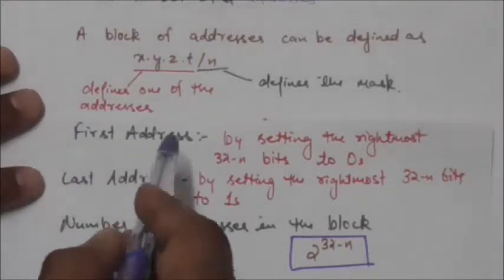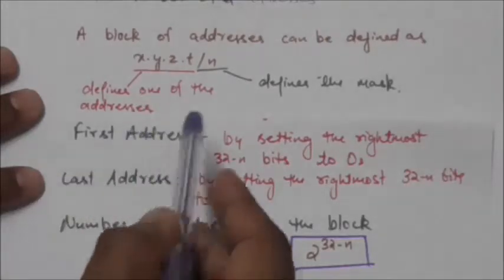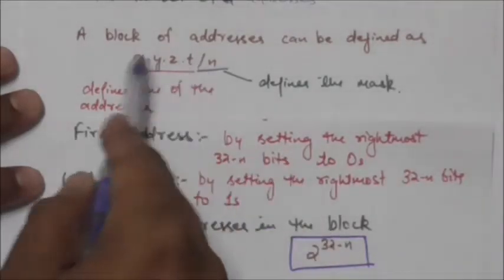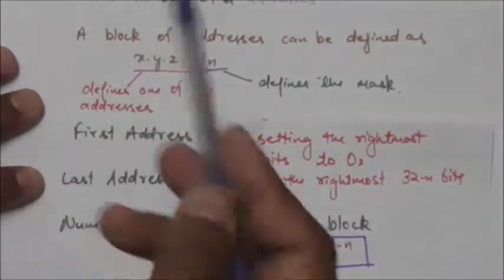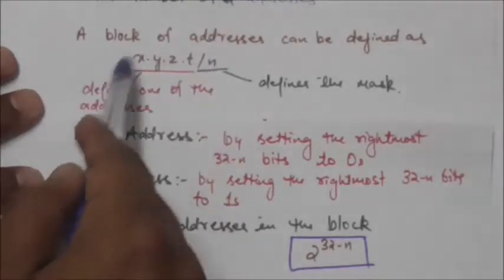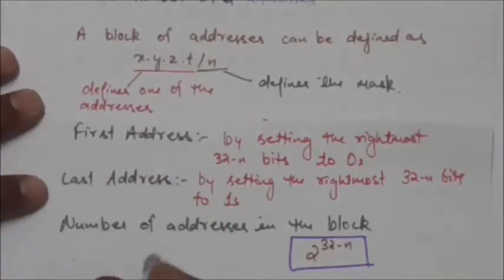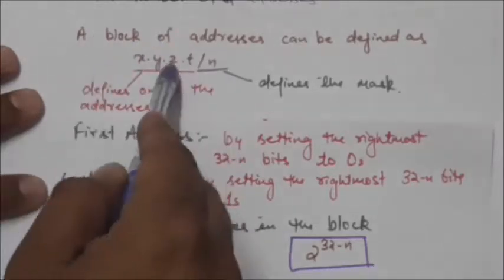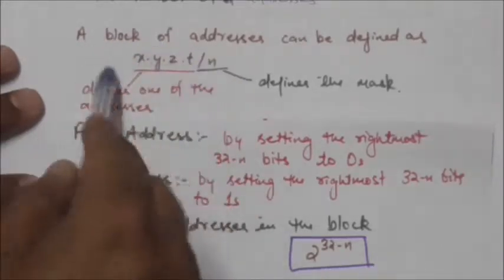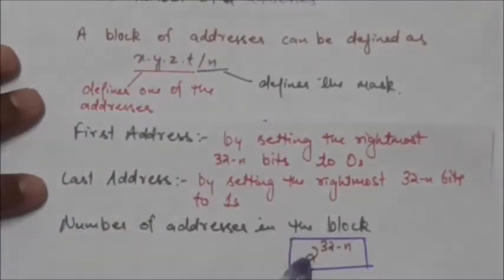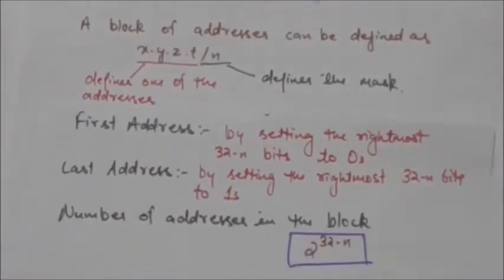The last address in the block can be found by setting the rightmost 32 minus n bits of this address to ones. The number of addresses in the block will be equal to 2 raised to the power of 32 minus n.